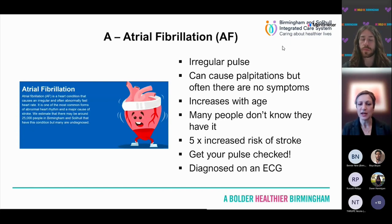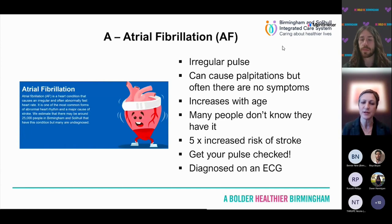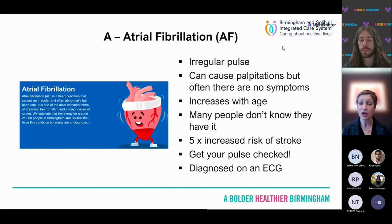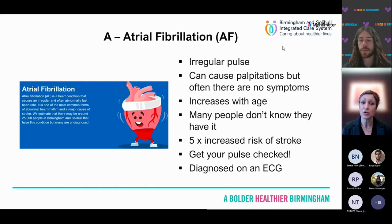Strokes related to AF tend to be the most devastating. In simple terms, we have two top chambers called atria and two bottom chambers called ventricles. In atrial fibrillation, the atria fibrillate instead of contracting, so blood doesn't all get pushed out. Blood can pool in a little outpouch of the atria — like stagnant water in a pond. If that blood clots and a clot breaks off, it whizzes around the body and ends up in the brain. These tend to be quite large clots, causing devastating strokes with poor outcomes and high levels of disability.